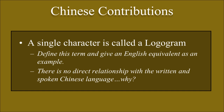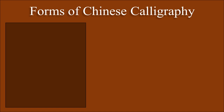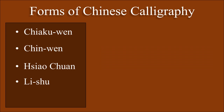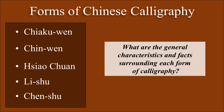There are five basic forms of Chinese calligraphy. The first is called Chai Kou Wen. The second is Chin Wen. The third is Shao Chuan. The fourth is Li Xu. And the fifth is Chen Xu. I want you to be able to tell me what are the general characteristics and facts surrounding each form of calligraphy.